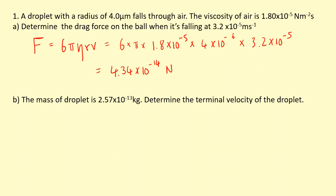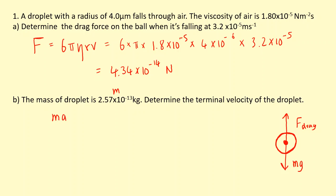That value is quite small, but correct for a particle this small. The same droplet has a mass of 2.57×10⁻¹³ kg — determine the terminal velocity. At terminal velocity the forces are balanced, which is why it travels at constant speed. Falling due to gravity, mg is balanced by the drag force F_drag.